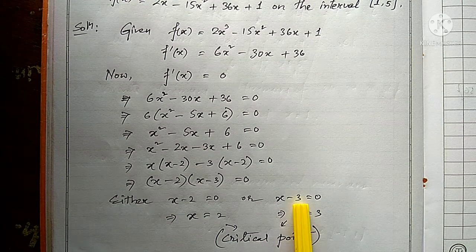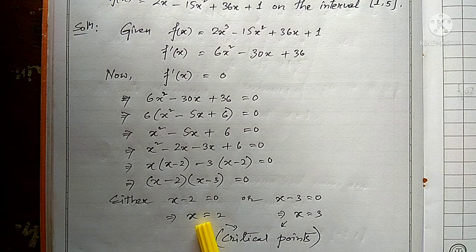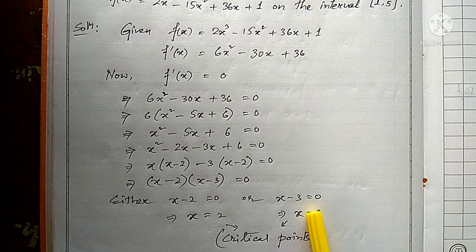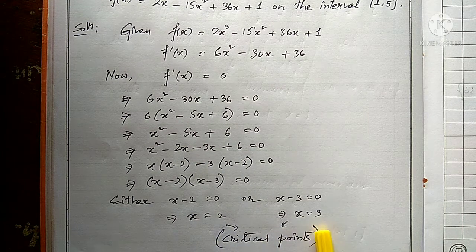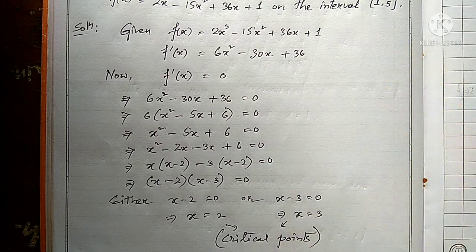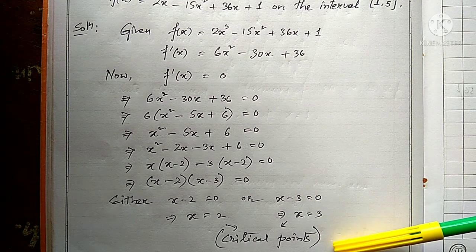The values x = 2 and x = 3 are known as stationary points or critical points. These two steps — finding f'(x) and setting f'(x) = 0 — give us the critical points.